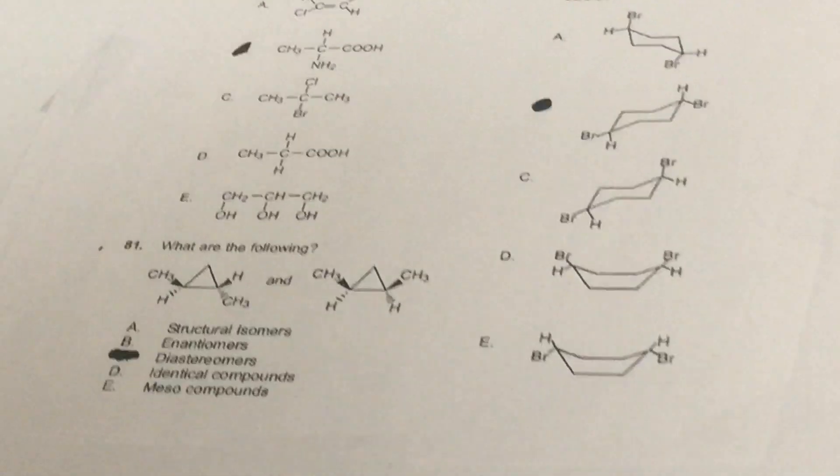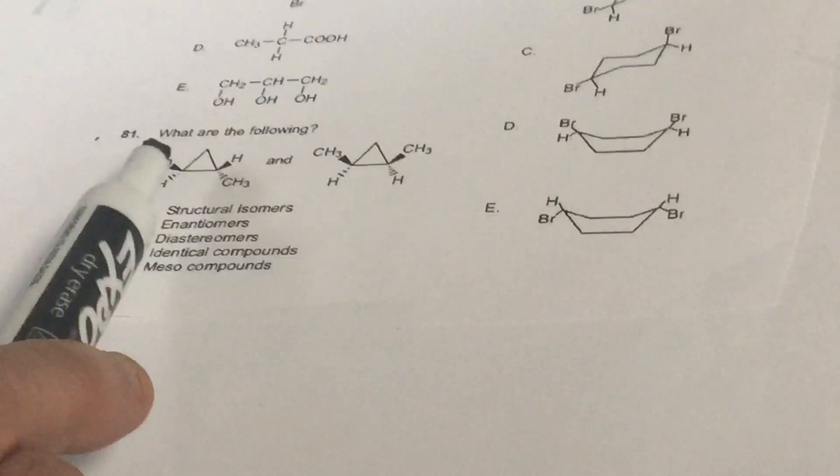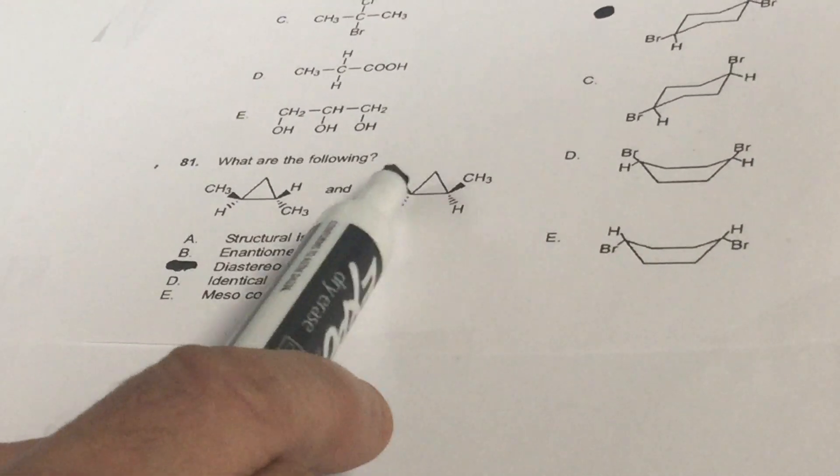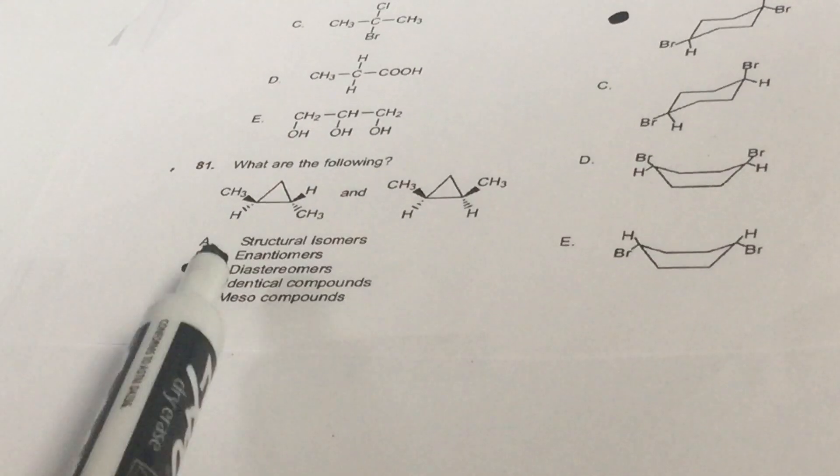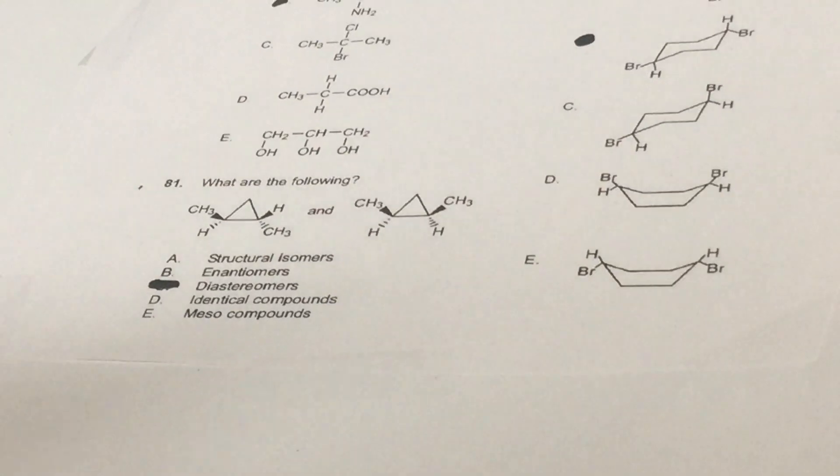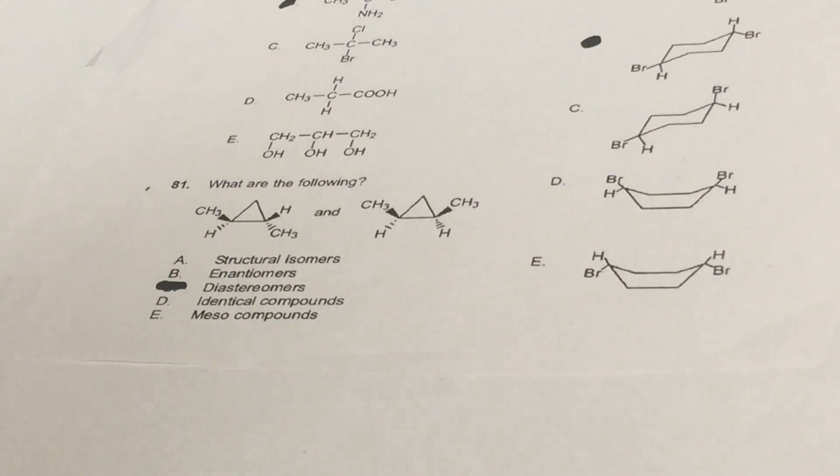This next one is a good question. It's a slam dunk. Here we want to know the relationship. Here the two methyls are trans. Here the two methyls are cis. So if I ever ask you, what's the relationship between cis-trans, what are they called? Diastereomers. That's a short bet question.